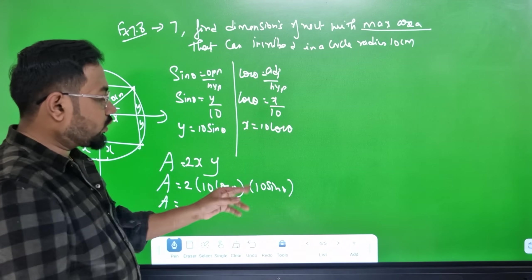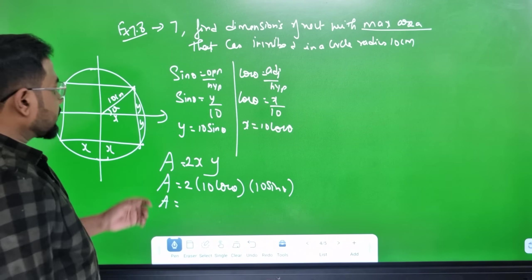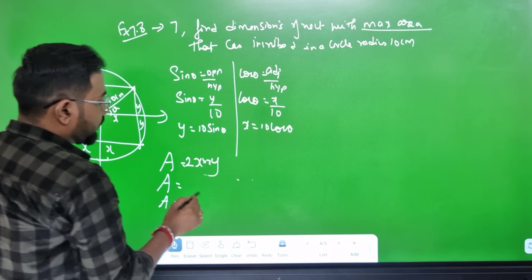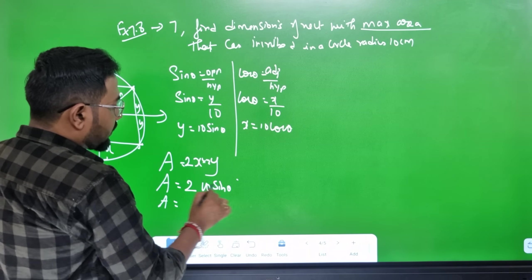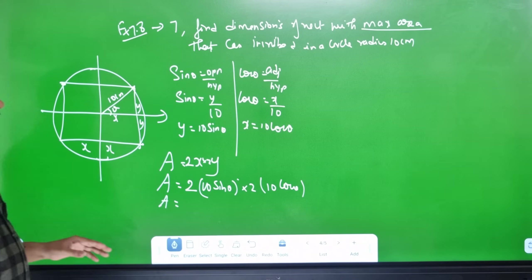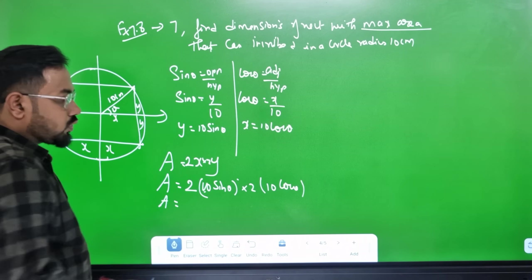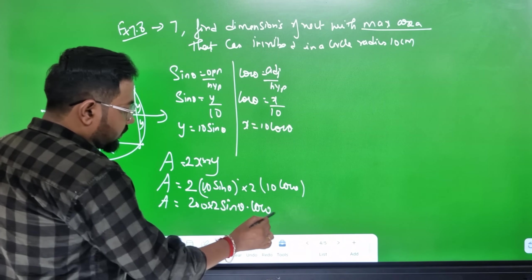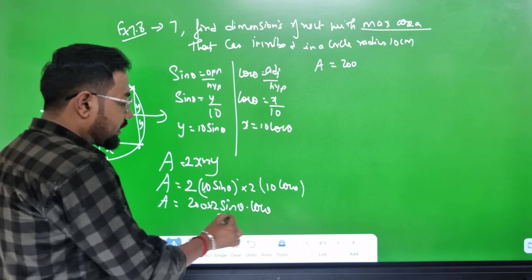So A = 4 × 10cosθ × 10sinθ = 4 × 100 × sinθcosθ = 400sinθcosθ. Using the identity 2sinθcosθ = sin2θ, the area becomes A = 200sin2θ.